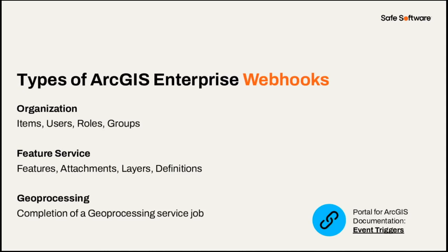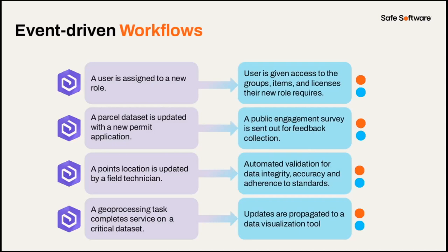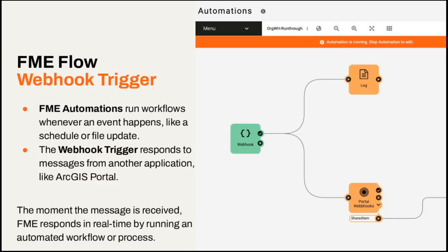Within each category we can monitor for many different kinds of events — a full list is linked on this slide. For example, FME could respond to changes in a user's role by updating their permissions; we may want notification for different kinds of dataset updates; or automatically run a data validation workflow when a field crew makes an edit; or synchronize with different software our organization uses. All of these represent tasks often done manually, subject to error, or that we should be doing but can't find enough resources for.